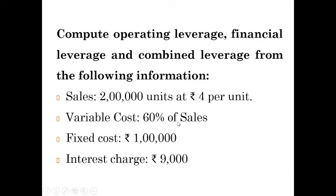Variable cost is 60% of sales. If we have sales, 60% of sales will be variable cost — we need to calculate the variable cost accordingly. Next, the fixed operating cost is 1,00,000. Fixed cost will remain the same irrespective of changes in production or sales. And the last item is interest charge — that is interest on debenture or interest on loan — which is 9,000. With this information, the three leverages we need to calculate: operating, financial, and combined.